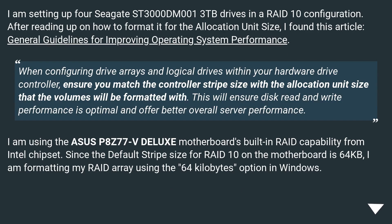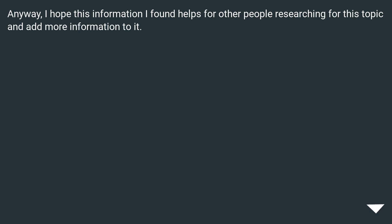I am setting up 4 Seagate SC3000DM001 3TB drives in a RAID 10 configuration. After reading up on formatting for allocation unit size, I found this guideline: when configuring drive arrays, ensure you match the controller stripe size with the allocation unit size that the volumes will be formatted with, to ensure optimal disk read and write performance. Since the default stripe size for RAID 10 on my ASUS P8Z77-V Deluxe motherboard's Intel chipset RAID is 64 KB, I am formatting my RAID array using the 64 KB option in Windows.